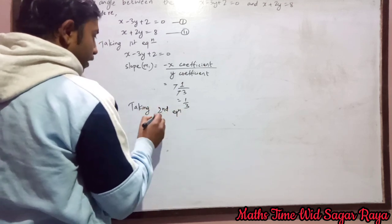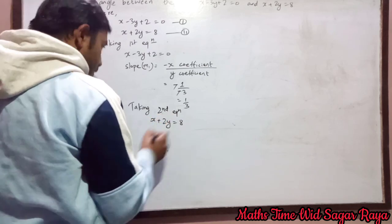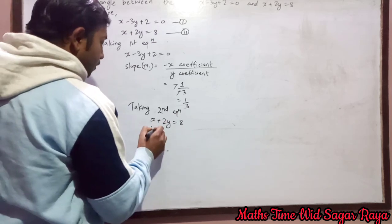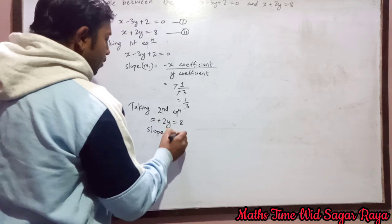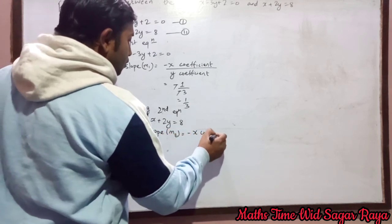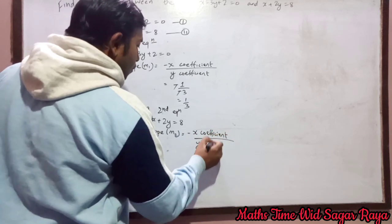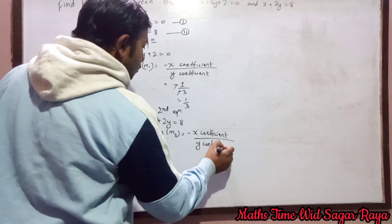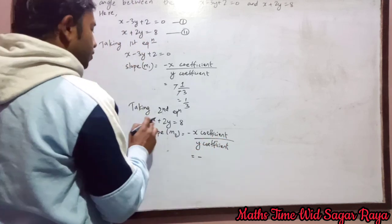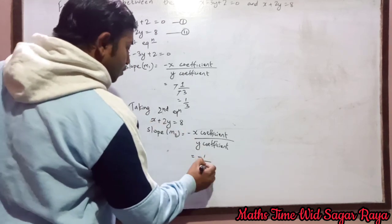So second equation is x plus 2y equal to 8, and then let's find here slope, let it be m2. So minus x coefficient by y coefficient, minus x coefficient means here 1 by y coefficient means 2.